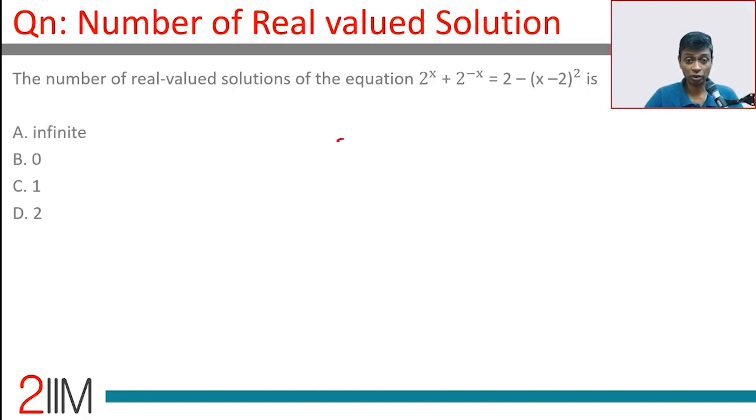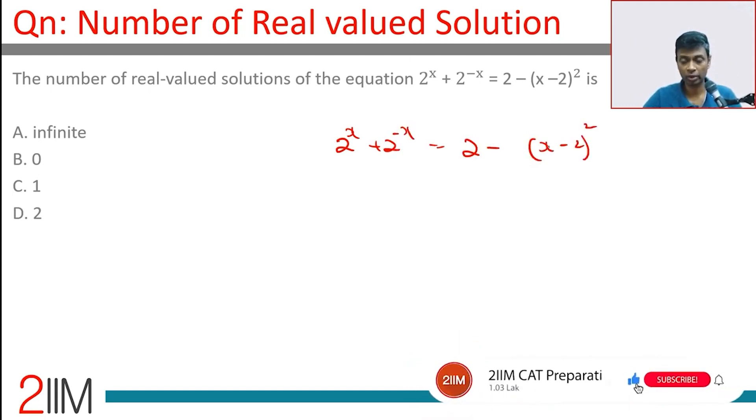The number of real valued solutions to the equation 2^x + 2^(-x) = 2 - (x-2)^2. Beautiful question. Think about this: 2^x and 2^(-x) are both positive.